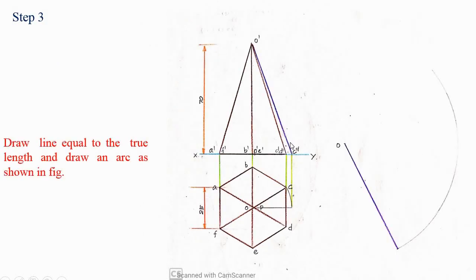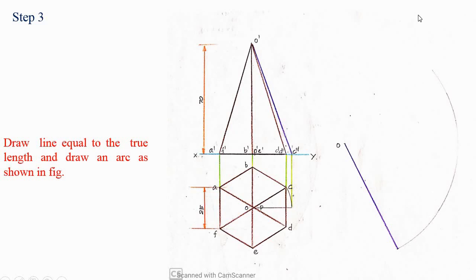Now in the next step, you are going for the development. You measure the length O dash C double dash and draw that particular length. This length is nothing but the true length. With the center as O and this true length as radius, you just draw an arc. So draw a line equal to the true length and draw an arc as shown in the figure.